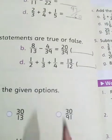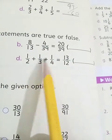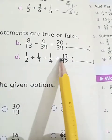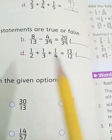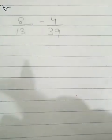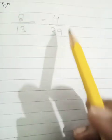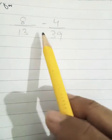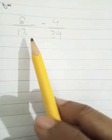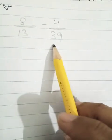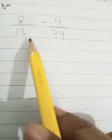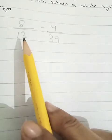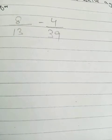Now come to part B. 8 upon 13 minus 4 upon 39 equals 20 upon 39. Is it true or false? Again we will have to solve this sum. So let's do it. 8 upon 13 minus 4 upon 39. So this is the sum of subtraction. First we have to make the denominator same. Which one is the greater number? 39 is the greater number. Can we make 13, 39?